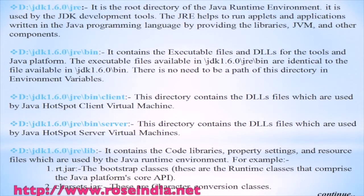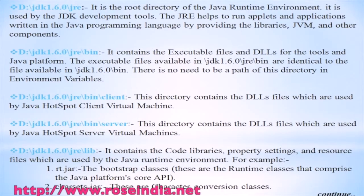JRE\bin directory contains the executable files and DLL files for the tools and the Java platform. The executable files available in JDK 1.6.0\jre\bin are identical to the files available in the JDK 1.6.0\bin directory. This directory should not be included in the system path variable. JDK 1.6.0\jre\bin\client contains the DLL files which are used by the Java HotSpot client virtual machine.